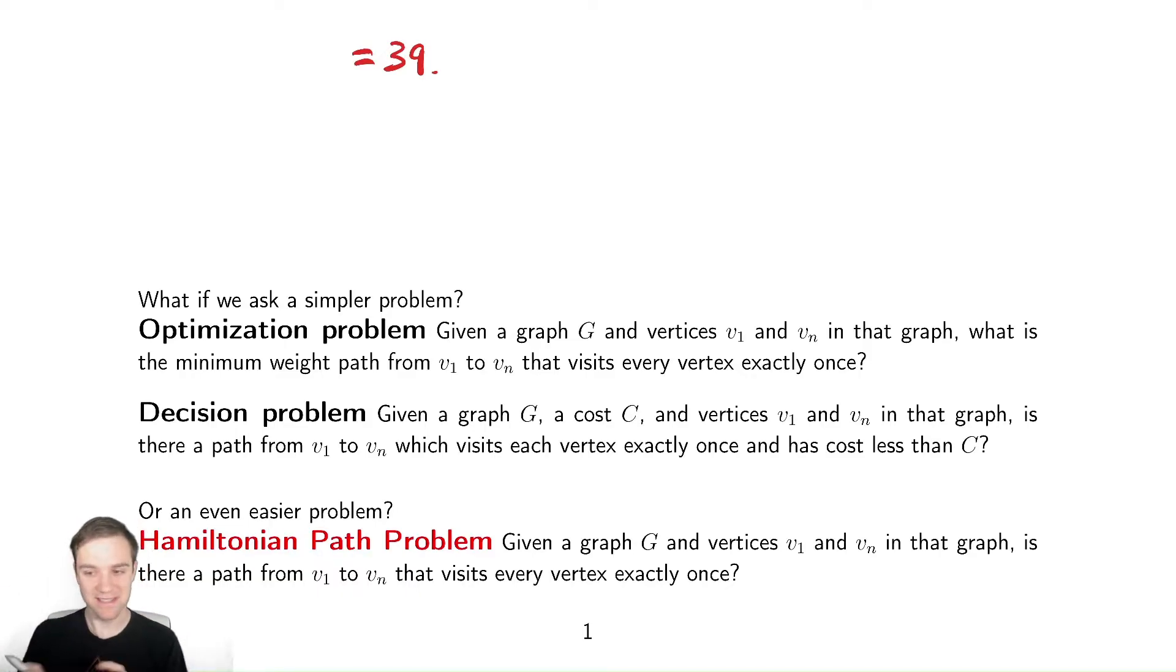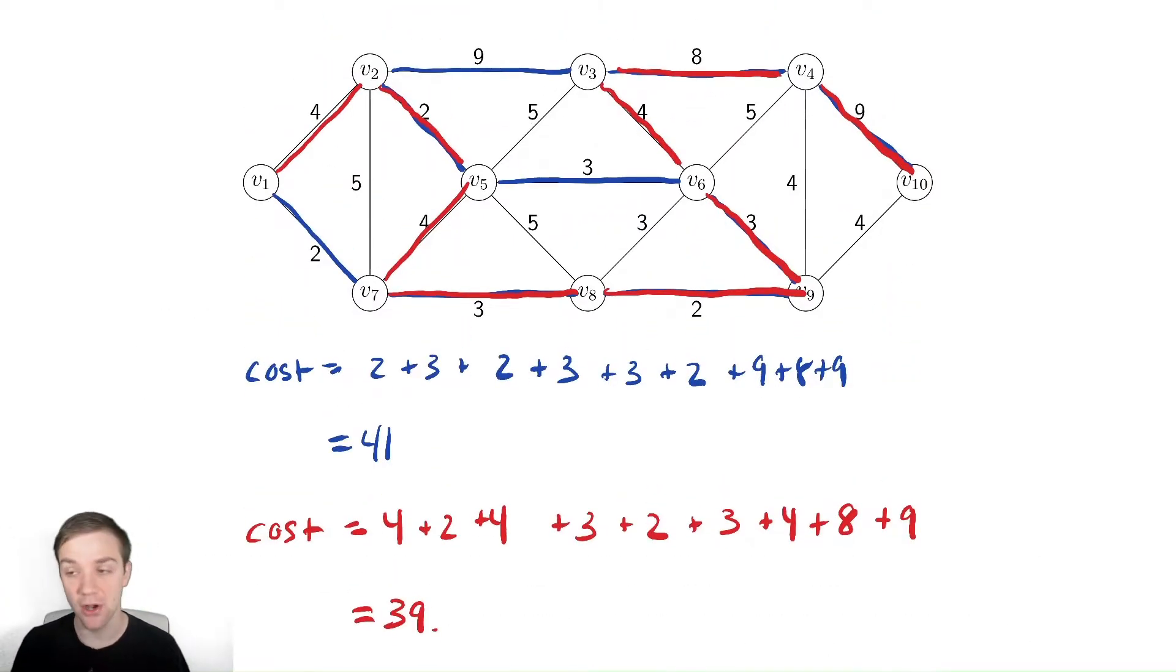An alternative question that seems like it should be easier is given the graph and all the vertices and everything, is there a path that has a cost less than whatever they provide as input? So for example, is there a path with costs less than 40 in this graph? That seems like it should be an easier question, but it turns out to be identical to the one we just asked. That doesn't help.